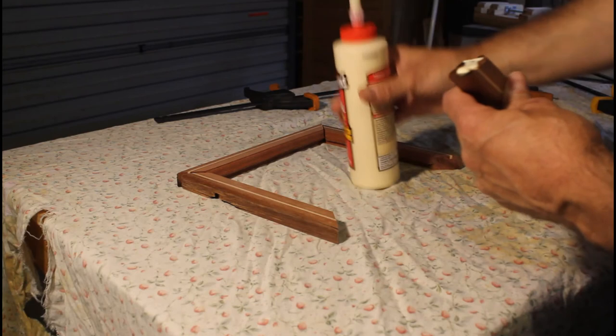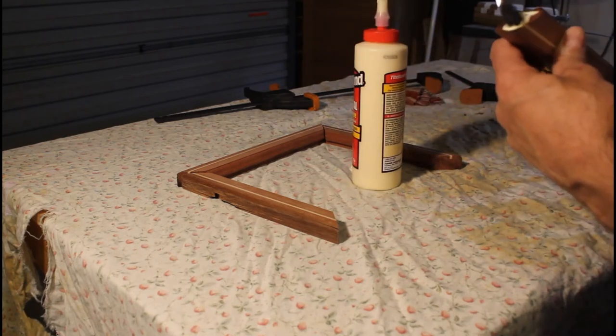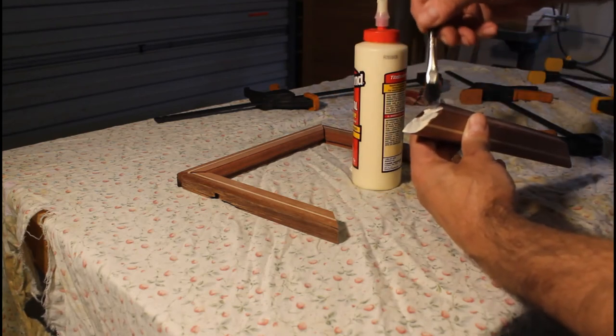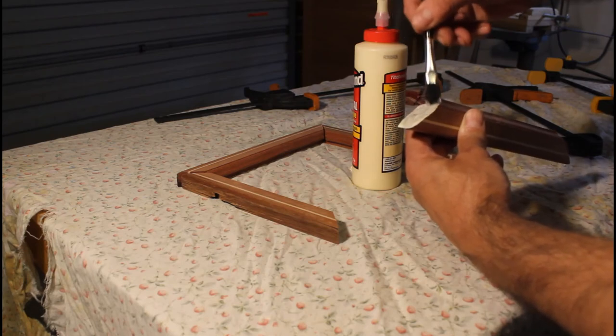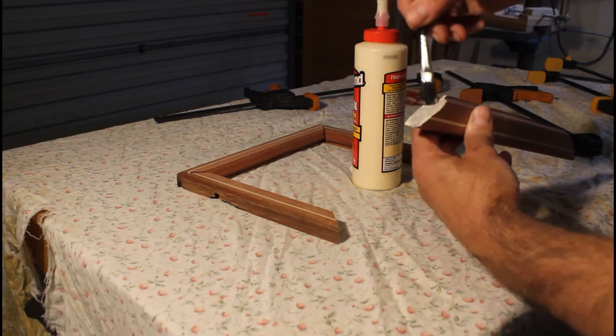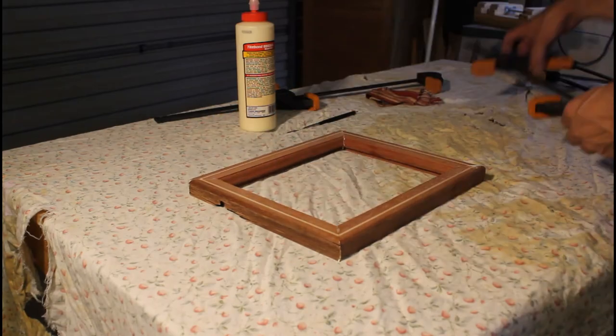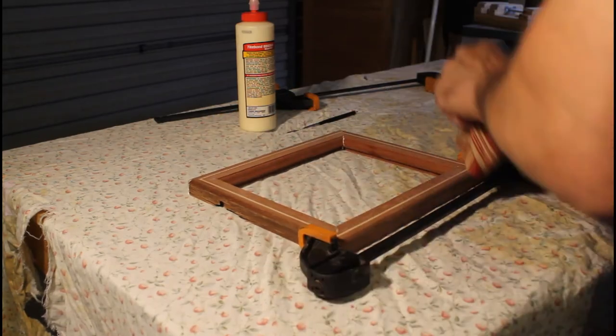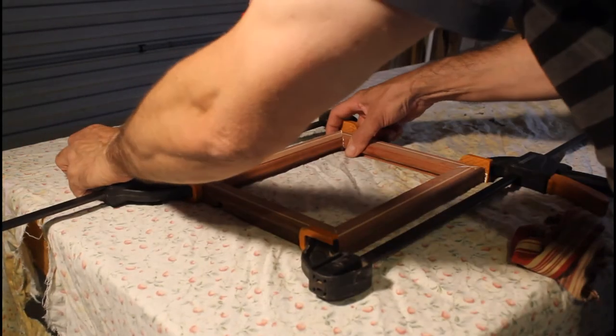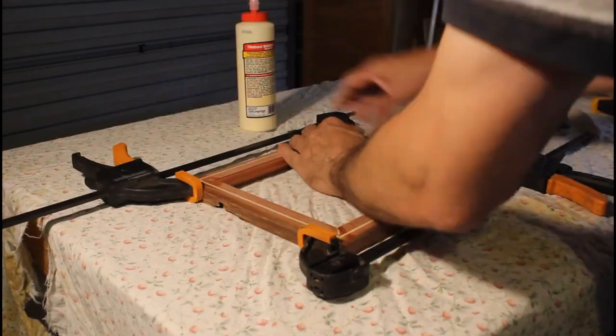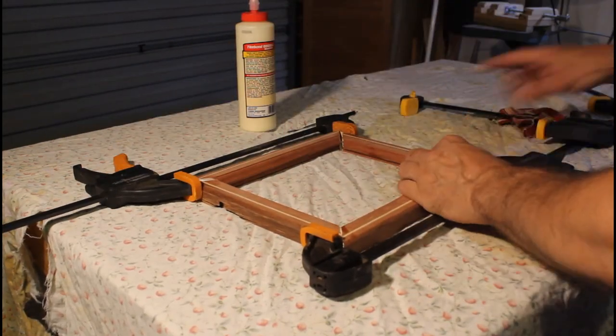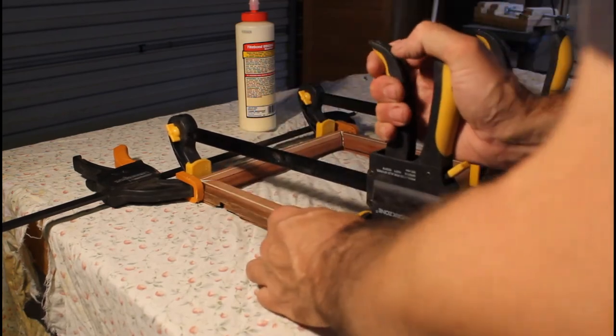Time for the glue up, where I used four clamps to help keep equal pressure on all four corners. The clamps can be quite tricky to set up, but just take your time and make small adjustments. Use a wet cloth when cleaning up the glue squeeze out.